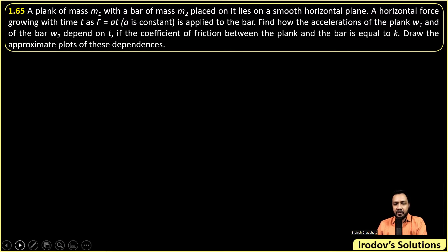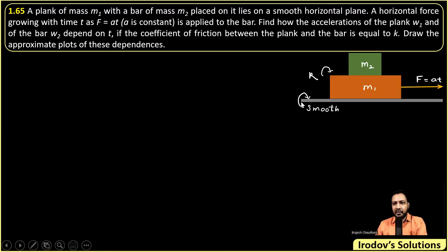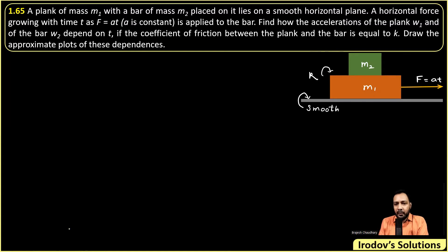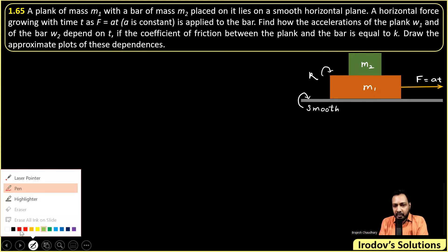Let me convert the problem into a diagram. This is a smooth surface over which a plank of mass m1 is placed, and over it a bar of mass m2 is there. The friction coefficient between m1 and m2 is k, and the time-varying force F = at is applied on the bar. We want to discuss the overall motion of this whole system.